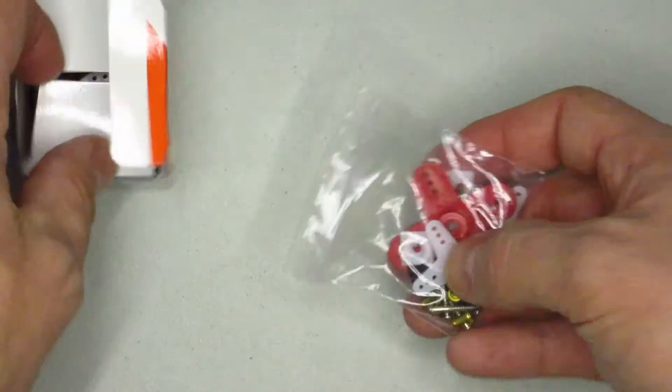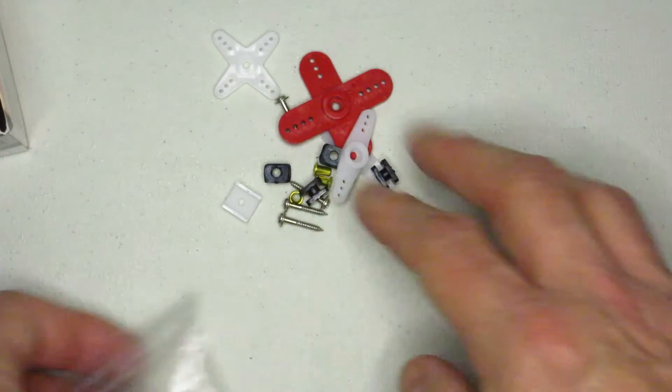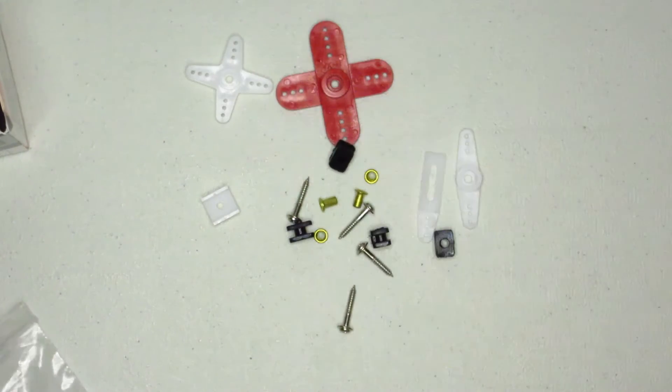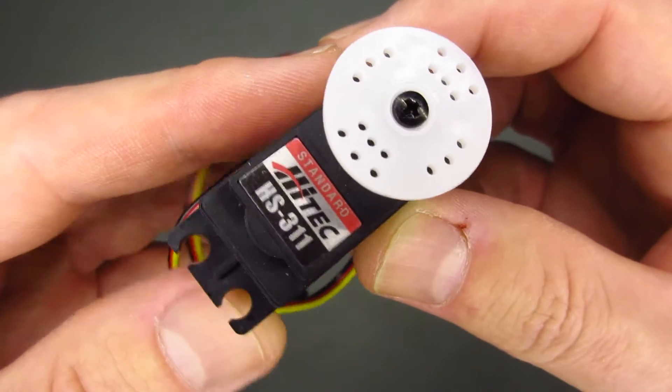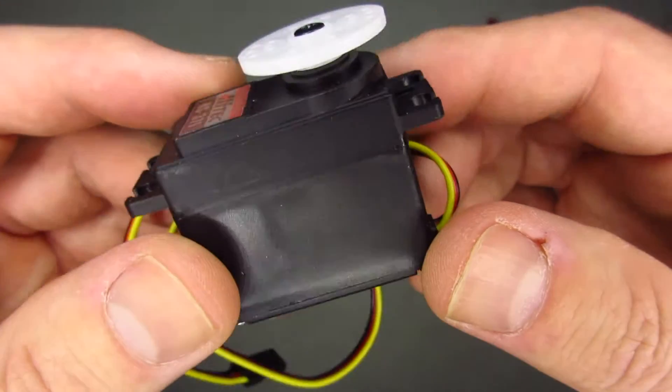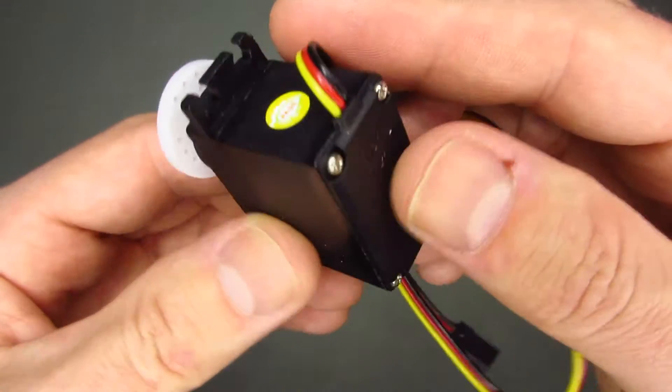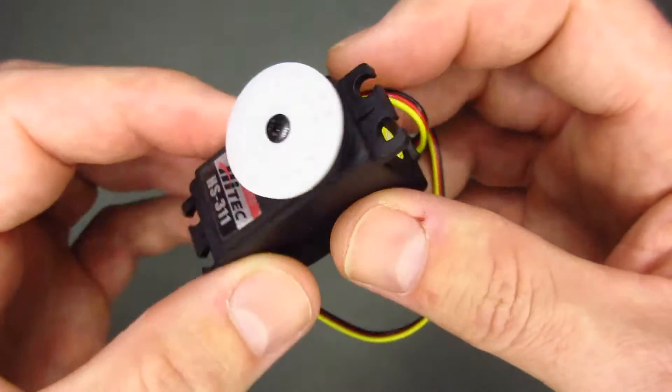Alright, look at this thing unpackaged here. Those are a bunch of servo horns and some hardware - we're not going to need that. So there's two things that we need to do here: one, we need to file down the potentiometer key, and we need